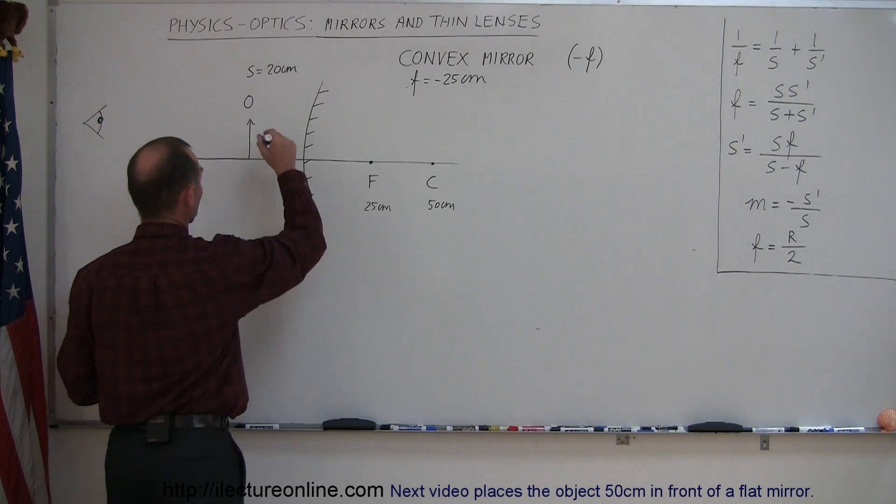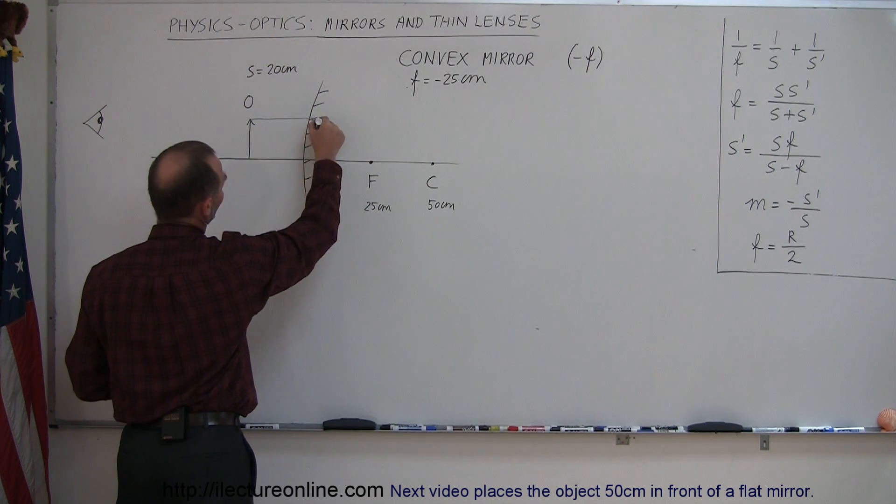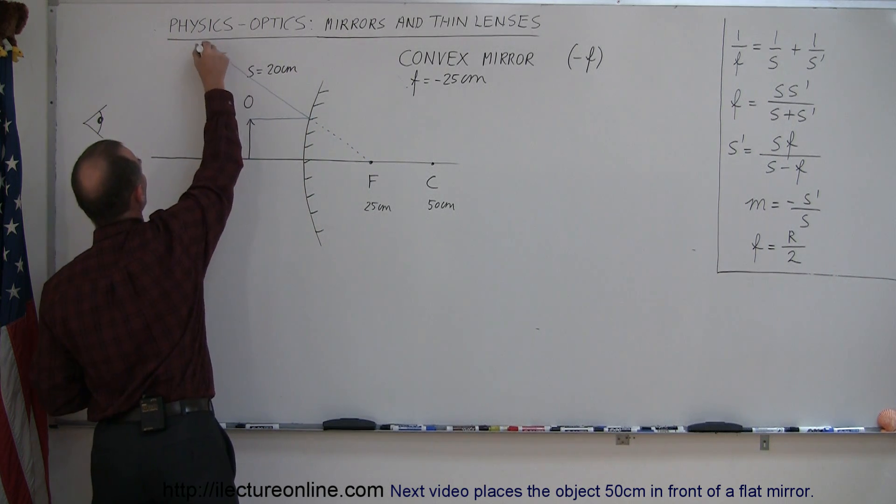Let's draw our rays. The first ray is always going to be parallel to the normal until it hits the mirror. It will reflect back as if it came from the focal point, so the focal point is back here, so the ray will go up in this direction. Ray number one.